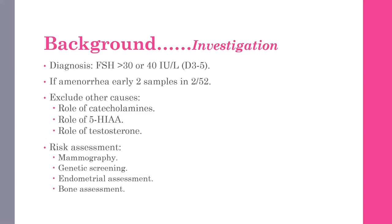Moving on to investigations: establish the diagnosis by checking FSH — this is the menopausal hormone, and you need to see whether it is raised. It should be more than 30 or 40 on day three to five, usually the follicular phase of the cycle, to denote declining ovarian function. If a patient is amenorrheic, two samples two weeks apart would give the answer. If amenorrheic for a long time, you can check FSH at the spot and repeat after two weeks.